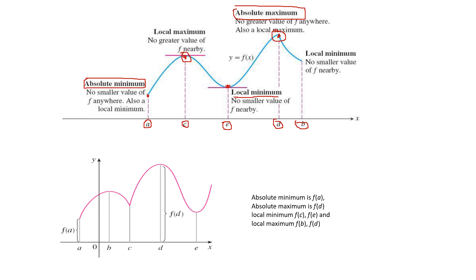Moving to the last point b, after this point there is no smaller value, so we call this point local minimum. For the entire graph: point a is the absolute minimum, point d is the absolute maximum, point c is a local maximum, point e is a local minimum, and point b is also a local minimum. In conclusion: absolute minimum is f(a), absolute maximum is f(d), local maxima are f(c) and f(e), and local minima are f(b) and f(d).